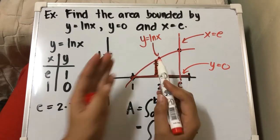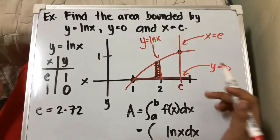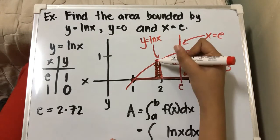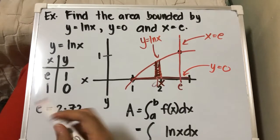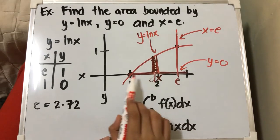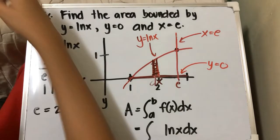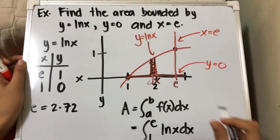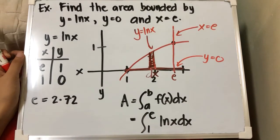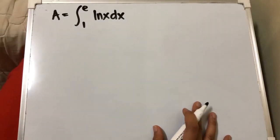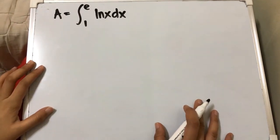If we solve this using a vertical strip — our strip can extend indefinitely towards x since it is changing with respect to x. So our limit is from 1 to e. This is the formula for our area: the integral of ln x dx from 1 to e.